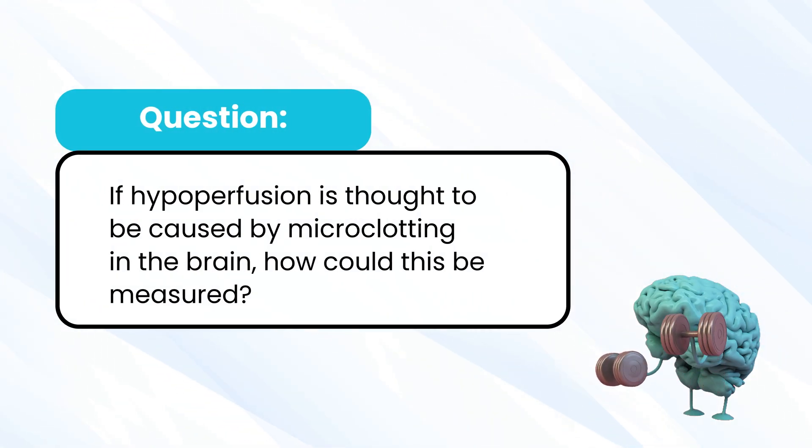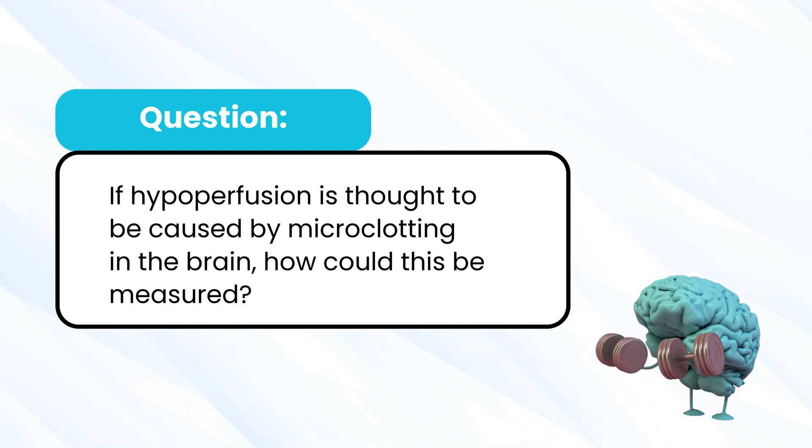Question: if hypoperfusion is believed to be caused by microclotting in the brain ensuring dead brain areas, how could this be measured? There are some assumptions here I wouldn't make. Not all hypoperfusion is from microclotting — that's number one. If we're talking specifically about microclots, we may be talking about very small levels of ischemia in different areas as we get down into the deep perforating vessels. It doesn't ensure dead brain areas. You can have a blockage in a tube that isn't a complete blockage — it may just slow blood flow under different conditions. So we shouldn't talk about it in terms of absolutes.